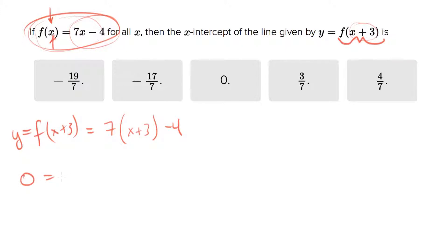So let's set 0 equal to 7x plus 21 minus 4. I just simplified this. Which equals 7x plus, let's see, 21 minus 4 is 17.